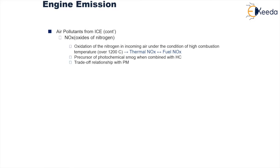Then we have oxides of nitrogen. Oxides of nitrogen are formed because we cannot simply supply pure oxygen for the combustion of fuel — we need to supply air as a whole, and from air, oxygen is used for combustion. But along with oxygen, the major chunk of air consists of nitrogen. So this nitrogen, at higher temperatures, will combine with oxygen resulting in the formation of oxides of nitrogen. These oxides of nitrogen also contribute to the formation of smog when hydrocarbons at higher temperatures combine with them. The temperature range for the formation of these oxides is around 1200 degrees Celsius and above.